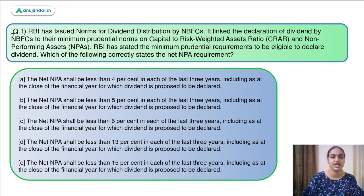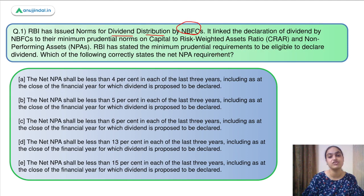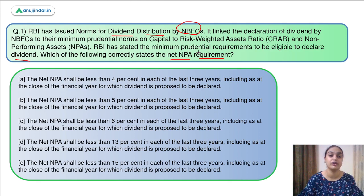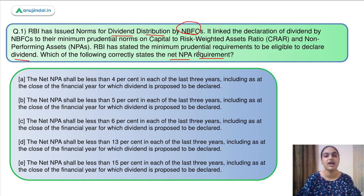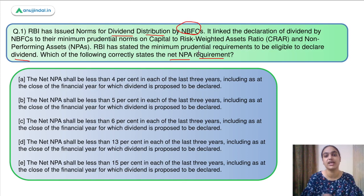Let us move on to question number one, which says: RBI has issued norms for dividend distribution by NBFCs. It linked the declaration of dividend by NBFCs to their minimum prudential norms on capital to risk-weighted assets ratio and non-performing assets. RBI has stated the minimum prudential requirements to be eligible to declare the dividend. Which of the following correctly states the net NPA requirement?